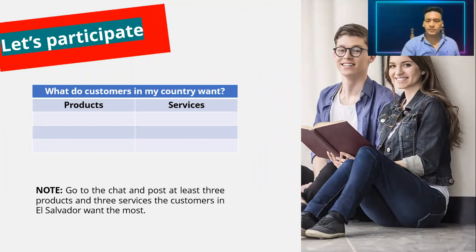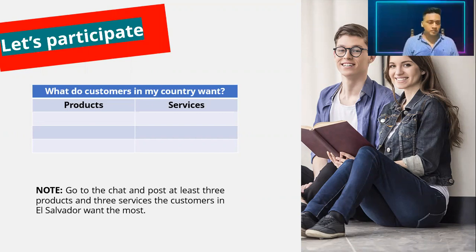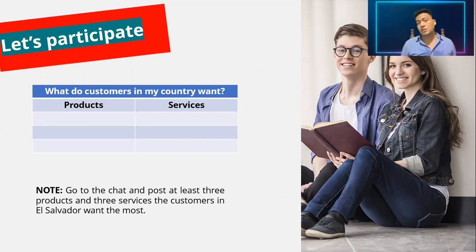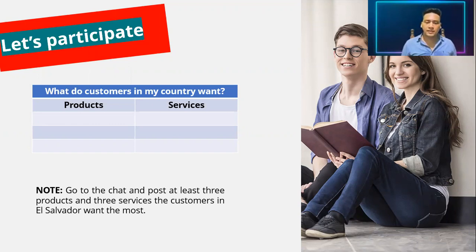Ariel: product — face mask, very good. Kevin: service. People are using that a lot nowadays. Uber service — very good. Although I think Uber here is only in San Salvador and San Miguel. Someone mentions accessories to hold face masks — those are trending as accessories for masks. Bitcoin mentioned as a product. Alcohol — very good, Raquel.